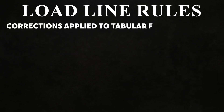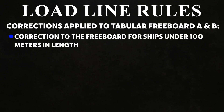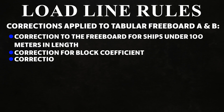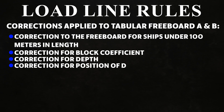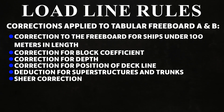Corrections applied to tabular freeboard for types A and B include: correction for ships under 100 meters in length, correction for block coefficient, correction for depth, correction for position of deck line, deduction for superstructures and trunks, shear correction, and minimum bow height.